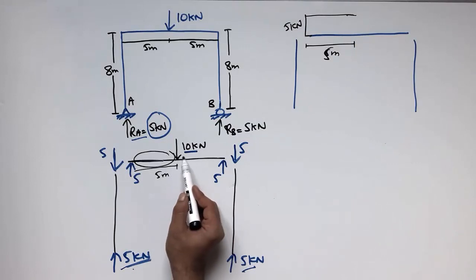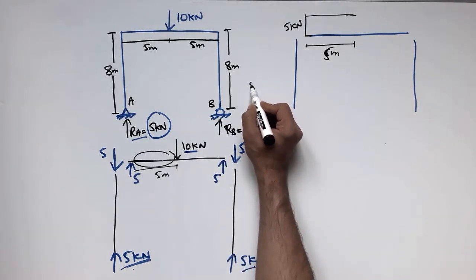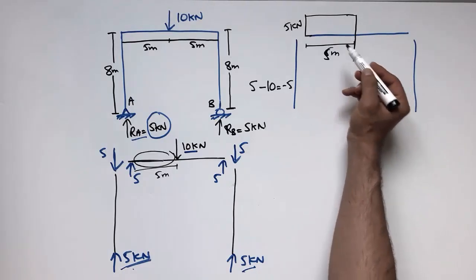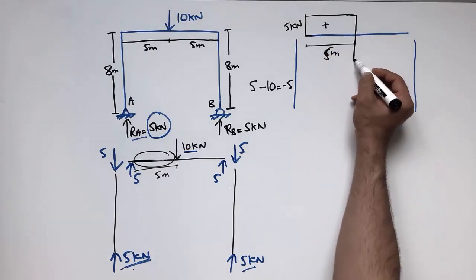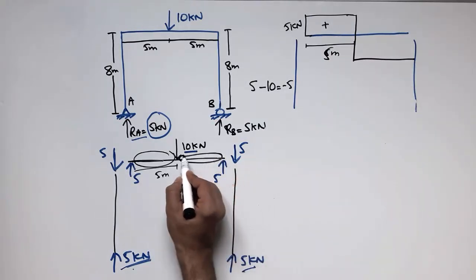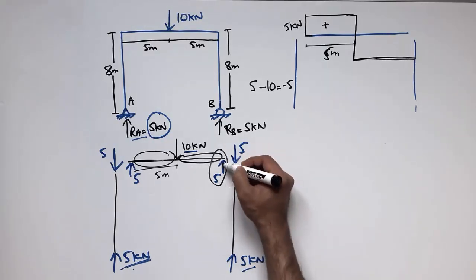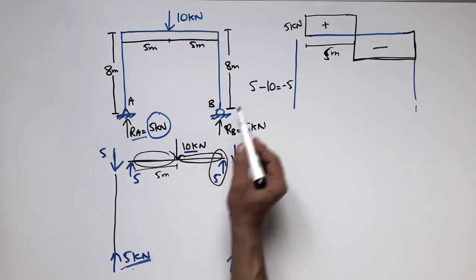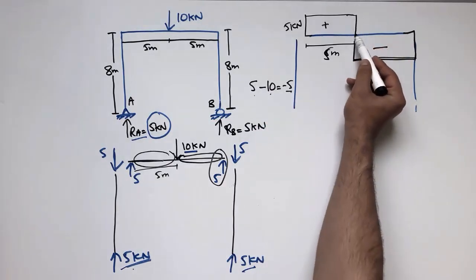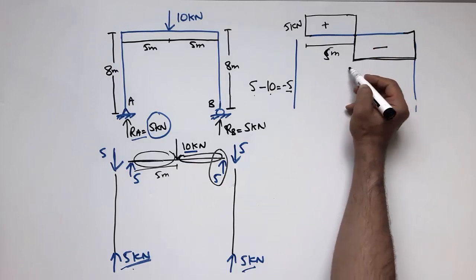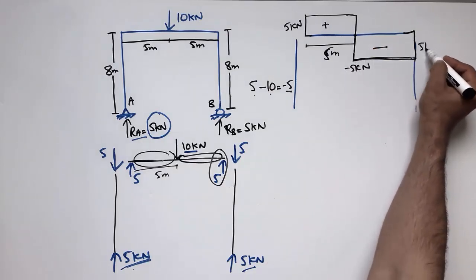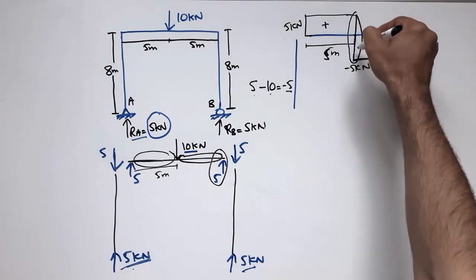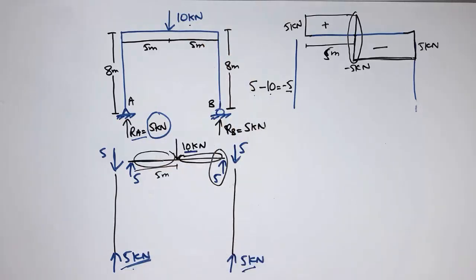At the center, there is a 10kN downward load. With 5kN acting upward and 10kN downward, we subtract to get minus 5kN, bringing the diagram down to minus 5. There is then no load for the next 5 meters, so a straight horizontal line is drawn. Then the 5kN reaction at the right support brings the diagram back to zero. The total height of the diagram is 10kN, representing the applied load.